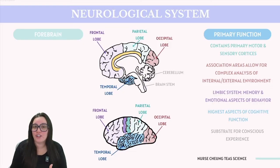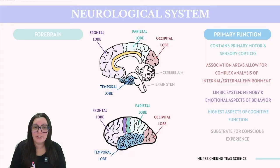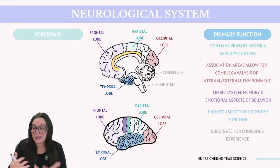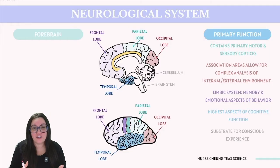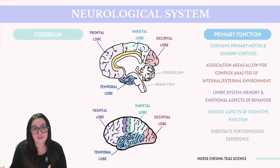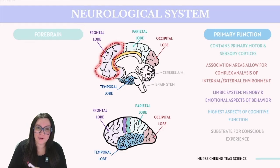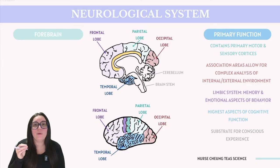The cerebral hemispheres also house the limbic system, which plays a crucial role in memory and the emotional dimension of behavior — influencing aspects of daily life such as eating, relationships, reproduction, and the fight-or-flight response. The limbic system is also integral to the highest level of cognitive function, encompassing planning, making judgments, experiencing emotions, reasoning, and ensuring behavior is appropriate to context. Much of this cognitive processing occurs in the frontal lobe's prefrontal cortex; damage to this area significantly impairs behavior, planning, and other cognitive functions.